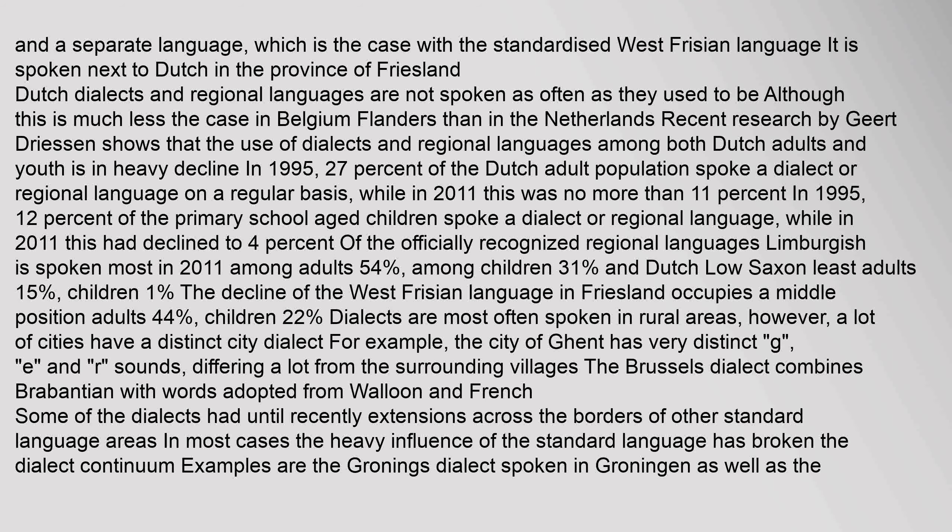Dutch dialects and regional languages are not spoken as often as they used to be, though this is much less the case in Belgium (Flanders) than in the Netherlands. Research by Geert Driessen shows that dialect use among Dutch adults and youth is in heavy decline. In 1995, 27% of the Dutch adult population spoke a dialect or regional language regularly; by 2011 this was no more than 11%. Among primary school-aged children, use declined from 12% in 1995 to 4% in 2011. Limburgish is the most spoken regional language, while Dutch Low Saxon is the least spoken.